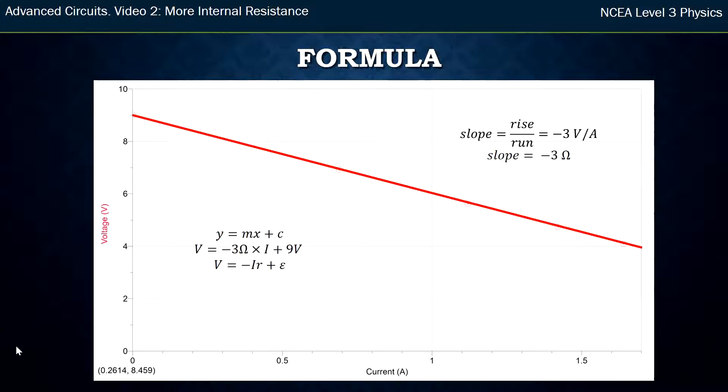I can simplify that down for any generalized value. Instead of writing -3 ohms, I can say that is the internal resistance—that's what that value is. It doesn't change no matter what's put in the circuit. It's the internal resistance of my battery. The 9 volts I've generalized: it's the EMF, and the symbol for EMF is that funny E, epsilon. So now I've got a general formula that I can use for whatever I put in a circuit to help me work out what the internal resistance is.